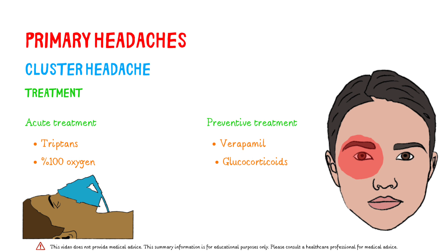Initial treatment with oxygen or triptans is recommended for patients with acute cluster headache. Verapamil is the agent of choice for initial preventive treatment in most patients. Glucocorticoids can also be used alone as preventive therapy when cluster attacks are infrequent and of short duration. The frequency of attacks may decrease with advancing age, and 25% of patients will have only one attack in their lifetime.